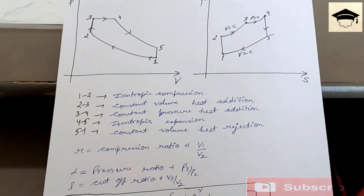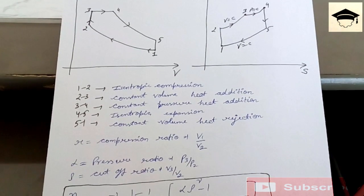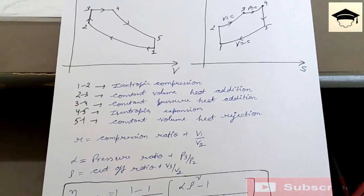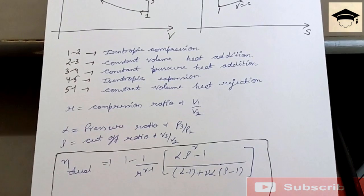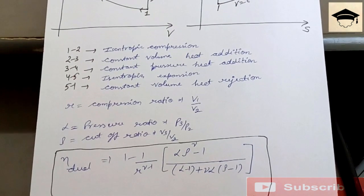And the efficiency of the dual cycle is given by 1 minus 1 upon r to the power gamma minus 1, into alpha rho to the power gamma minus 1, upon alpha minus 1, plus gamma alpha rho minus 1.